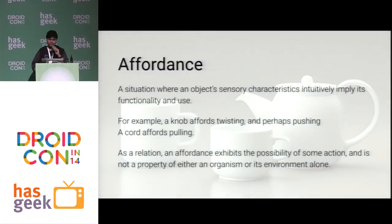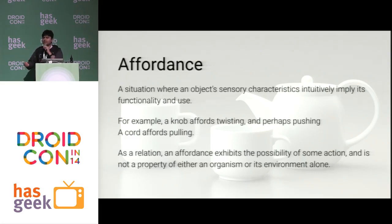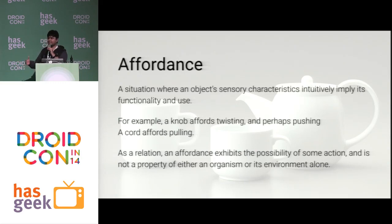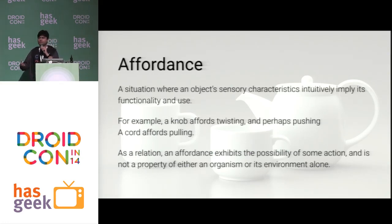That is called an affordance — a situation where an object's sensory characteristics intuitively imply its functionality and use. For example, if a door has a handle, just by looking at it your brain knows how to use the door. You see the handle, you know to pull or push it. Similarly, if you have a knob, you know you're supposed to twist it. A knob affords twisting. A chair affords sitting. That is the concept of an affordance.